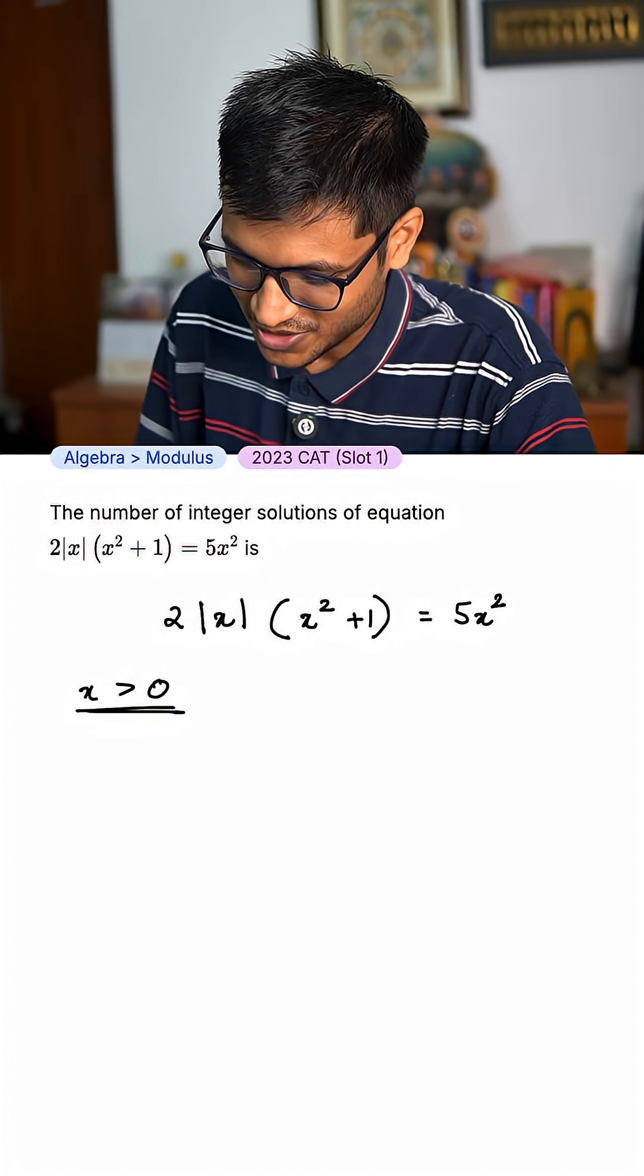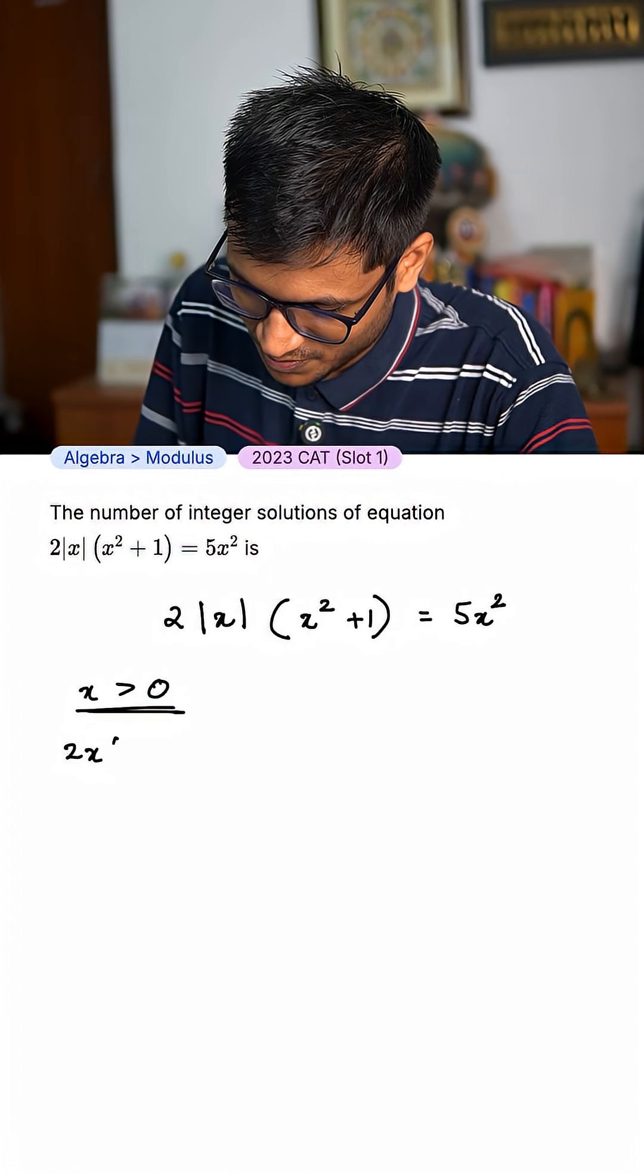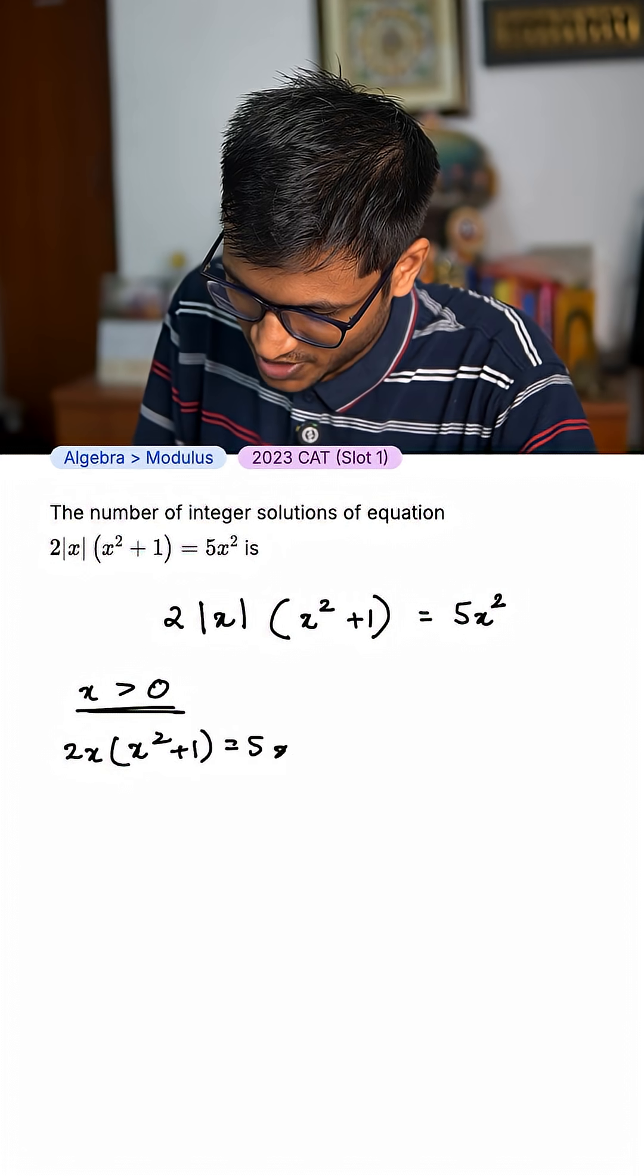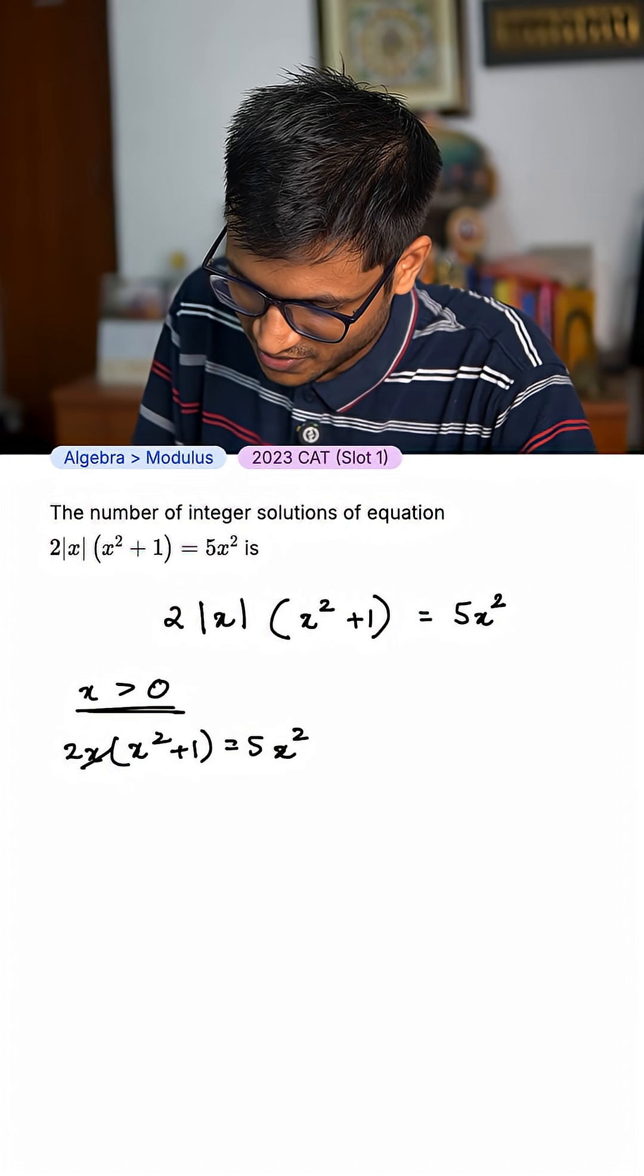Now, let us do x greater than 0. So, I get 2x times x square plus 1 equals 5x square. I can cancel this x and one of these x.